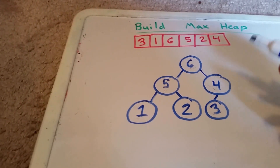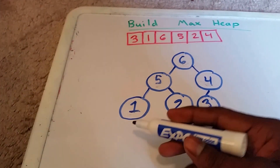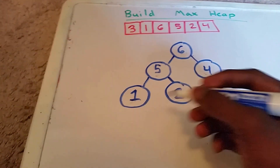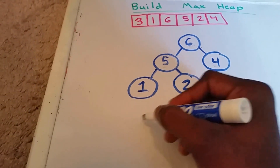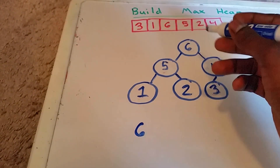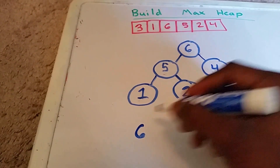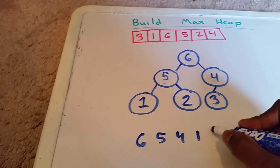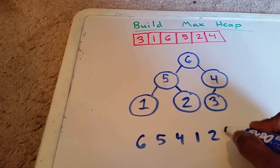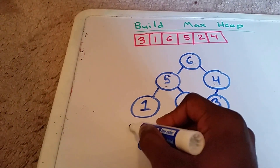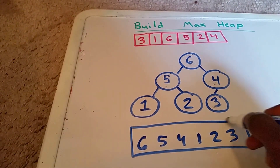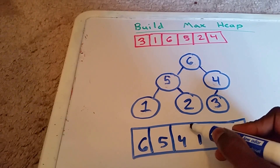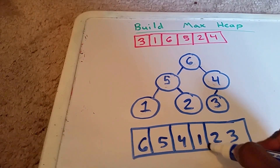And now there are no more elements left in the array, so we're done. And this is our heap. To see our heap represented as an array, we go again top to bottom, left to right. So we have 6, 5, 4, 1, 2, 3. So this is what our array would look like using this technique and as a heap.